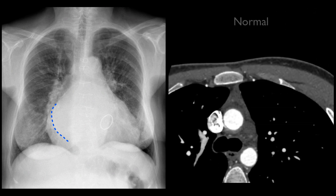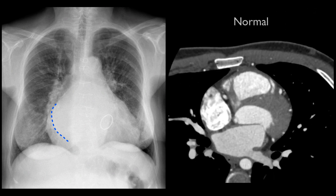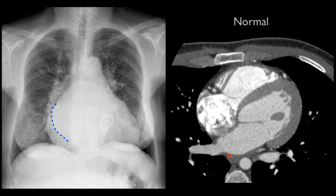If we look at this normal CT for correlation, you can see the posterior location of the left atrium. Here is the left ventricle, the right ventricle, and the right atrium, where there is mixing of contrast arriving from the SVC with non-opacified blood from the IVC. The edge interface between the right atrium and the air within the right middle lobe is responsible for the normal heart border seen on frontal radiographs.